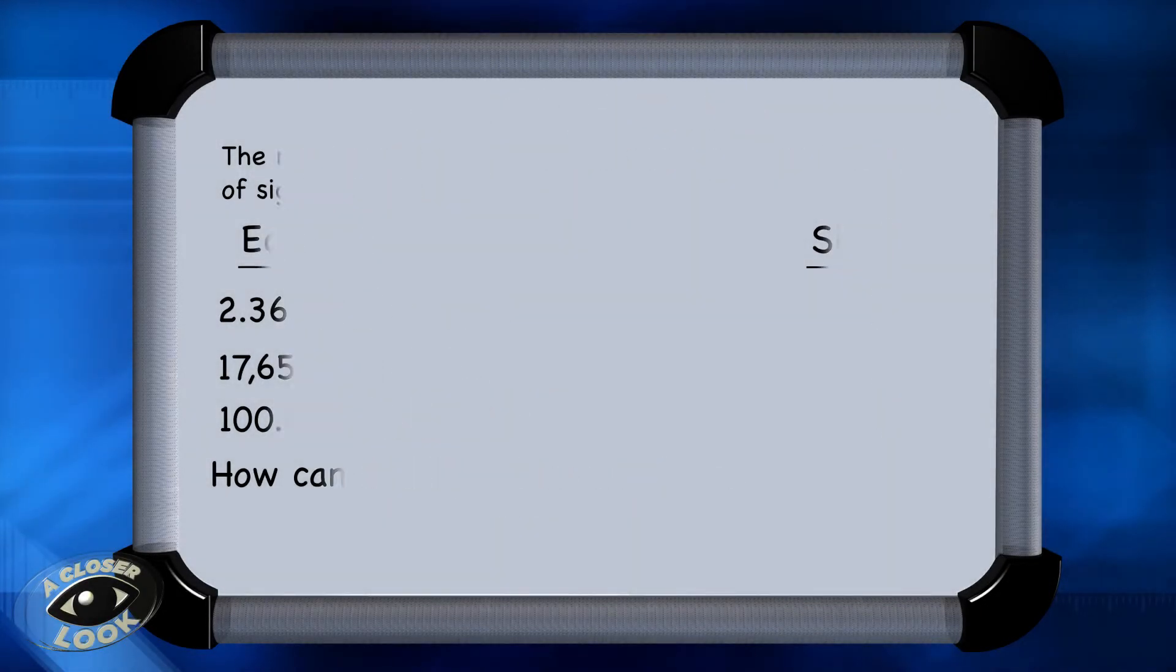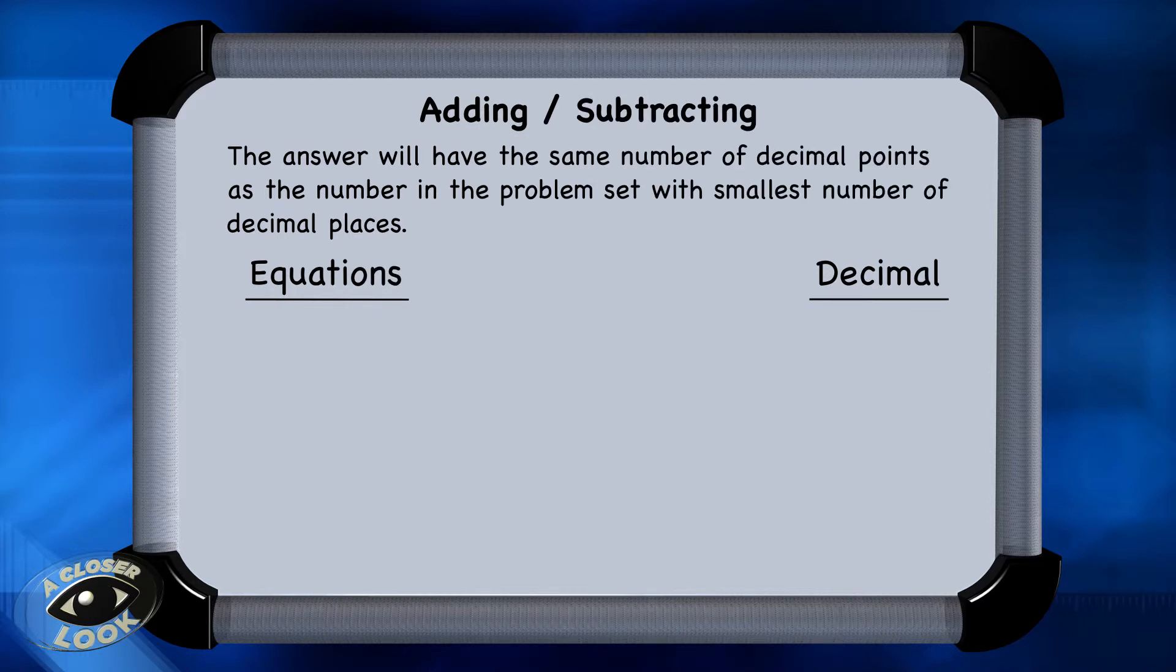Now let's look at the rules for addition and subtraction, which are different. When adding and subtracting, the final answer must be rounded to the smallest decimal value.